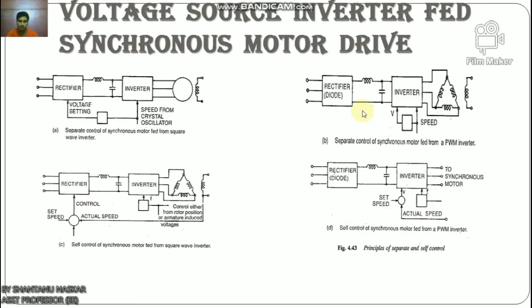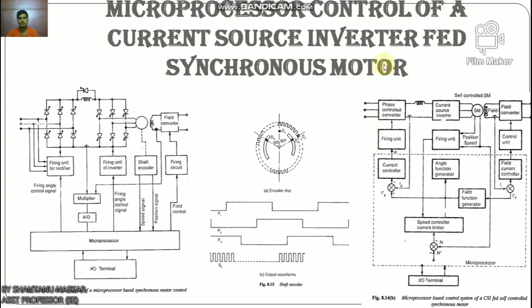Now let us discuss microprocessor control of a current source inverter fed synchronous motor. A drive system employing a current source inverter with synchronous motor has the following features: (1) four-quadrant drive can be accomplished very easily; (2) self-control which synchronizes the gating pulses of the inverter with rotor position provides improved steady-state and dynamic performance; (3) natural commutation using machine voltage is possible in a speed range from 10% of base speed upwards; at starting and low speed, force commutation is required, provided by additional commutation circuits or by interrupting the DC link current. A typical block diagram implementation of a microprocessor for control of a current source inverter fed synchronous motor is shown.